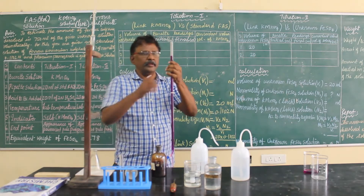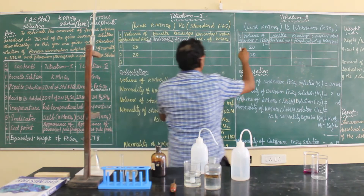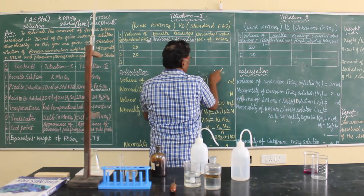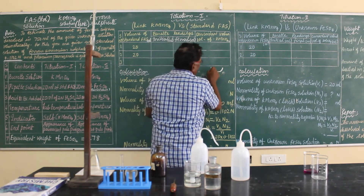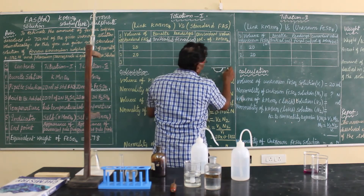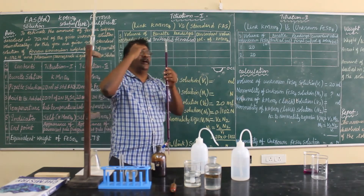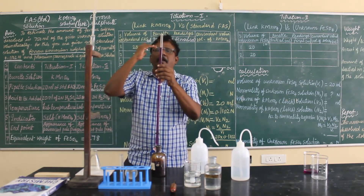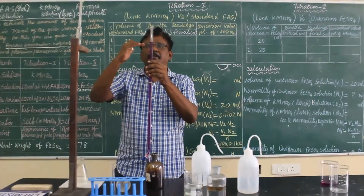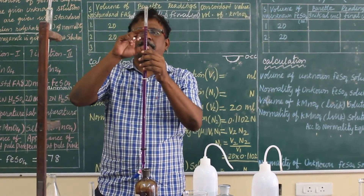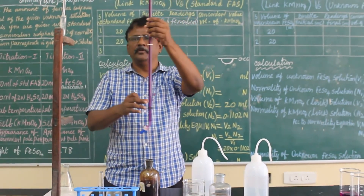If the solution is coloured, you have to read the upper meniscus. You can see the solution in the burette — the upper meniscus should coincide with the 0 ml mark. Look at the burette at your eye level; your eye level and the 0 ml mark on the burette should be at the same height. Check that the upper meniscus exactly coincides with 0 ml. Now the burette solution is ready.